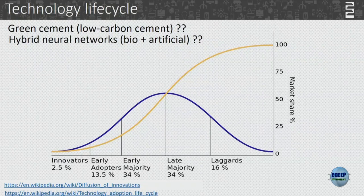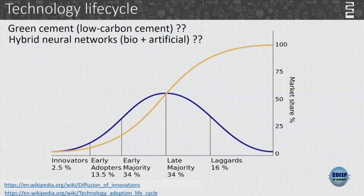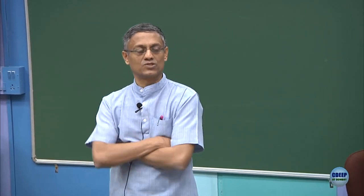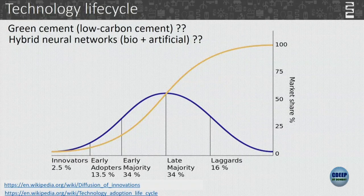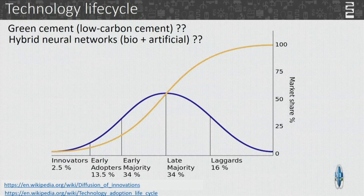Just a guess — do you think it is more like innovators or more like majority? Any data point you are giving? You have not heard much about it, so you feel it is innovators. How about hybrid neural networks — where part of it is biological/organic and part of it is artificial?